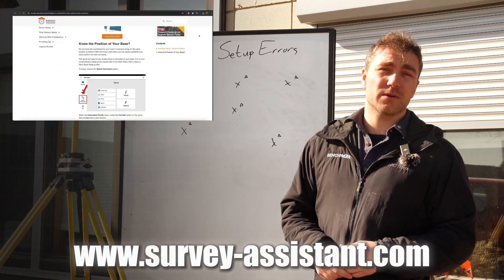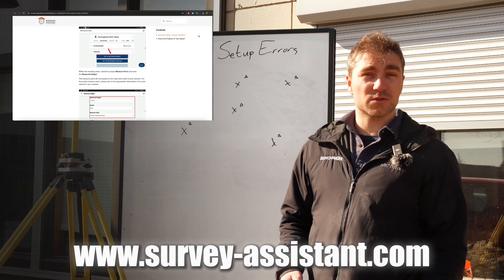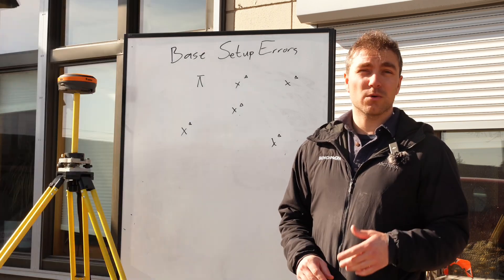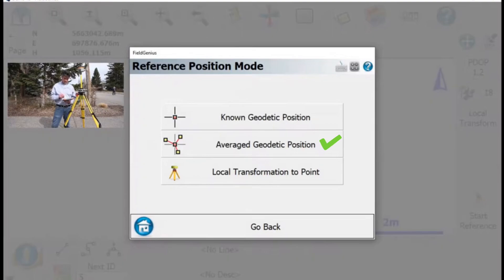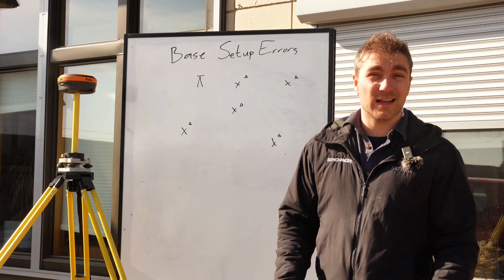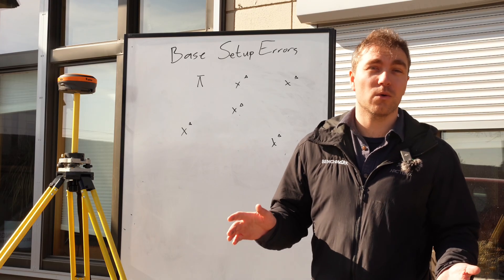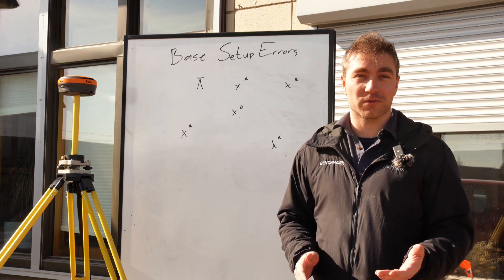So I put a video, a link to a video here on your day two setup, that would be the known point setup. You only really want to use an average point setup if it's your first day and you don't care if things line up or not, or if you're then going to go ahead and localize with the rover.